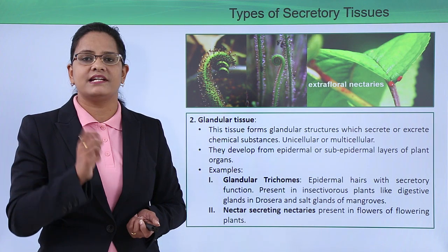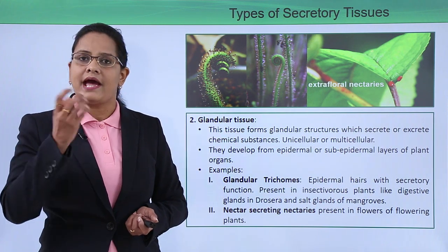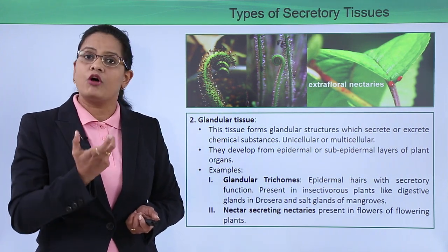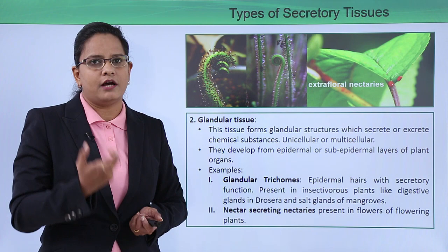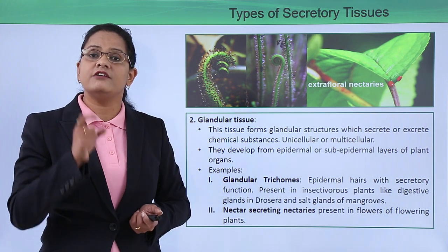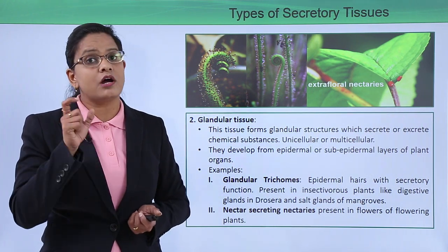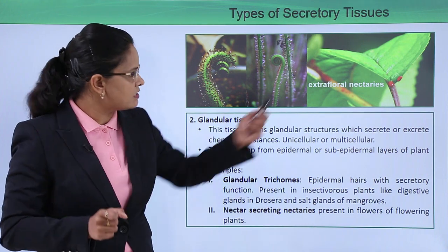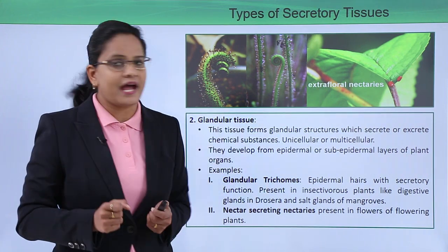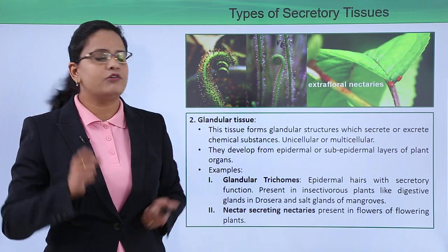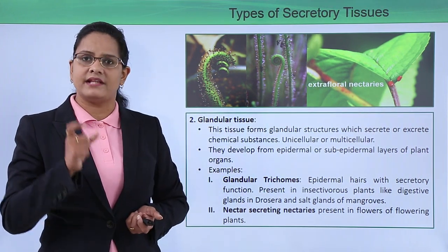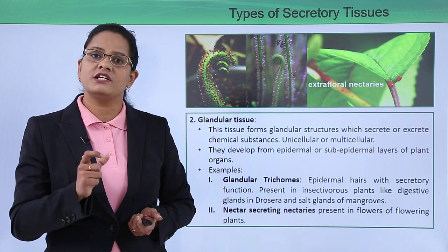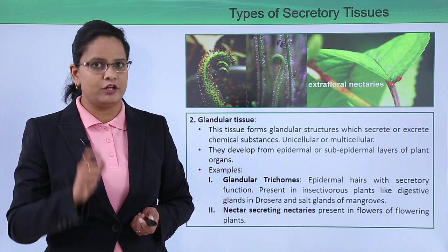The next type is nectar-secreting nectaries. All flowering plants secrete nectar, which attracts bees — we can also call it honey. This is secreted from extra-floral nectaries present on flowering plants. In the diagram you can see these extra-floral nectaries secreting nectar, which is a type of glandular tissue.